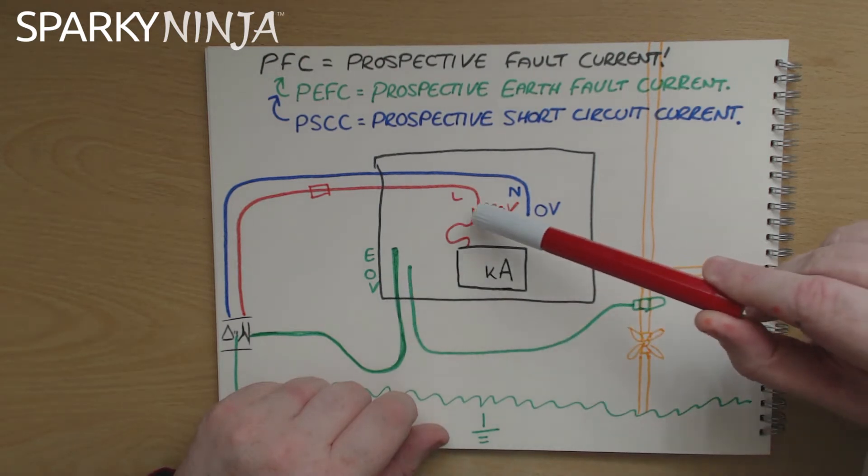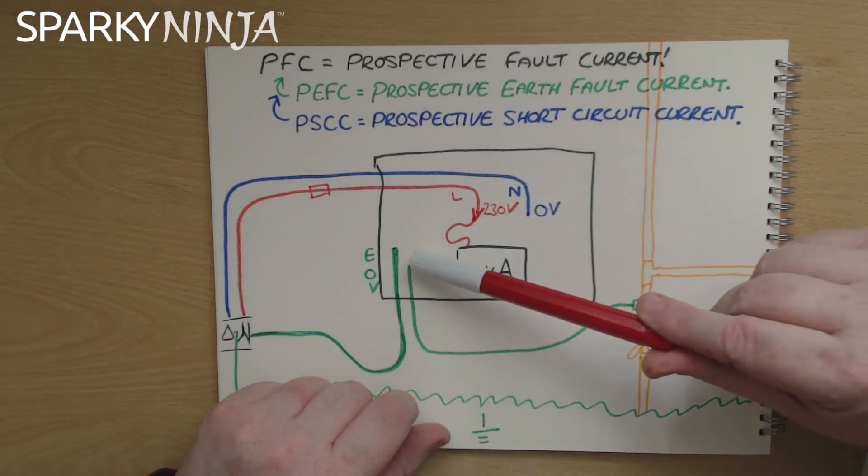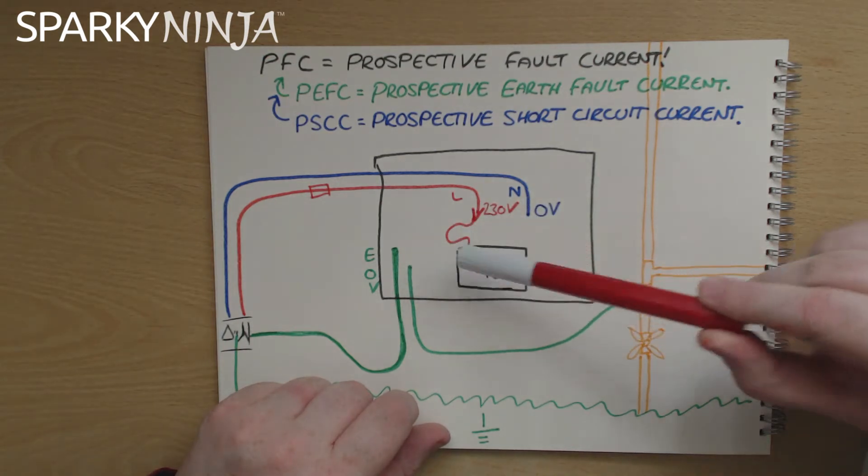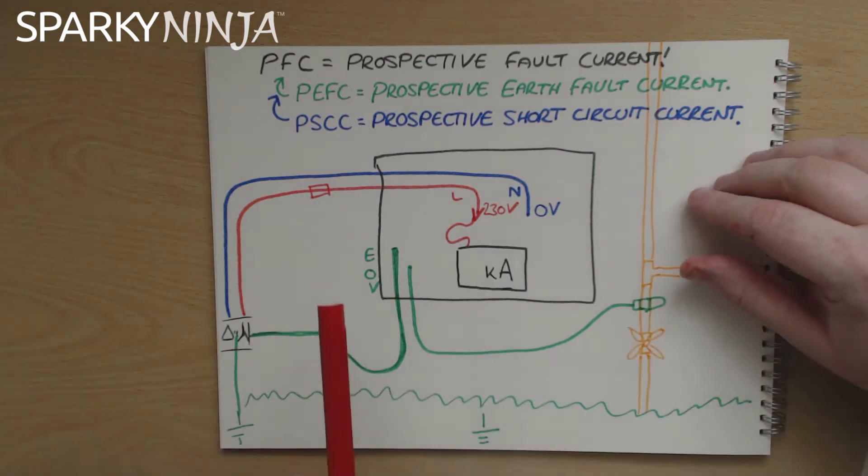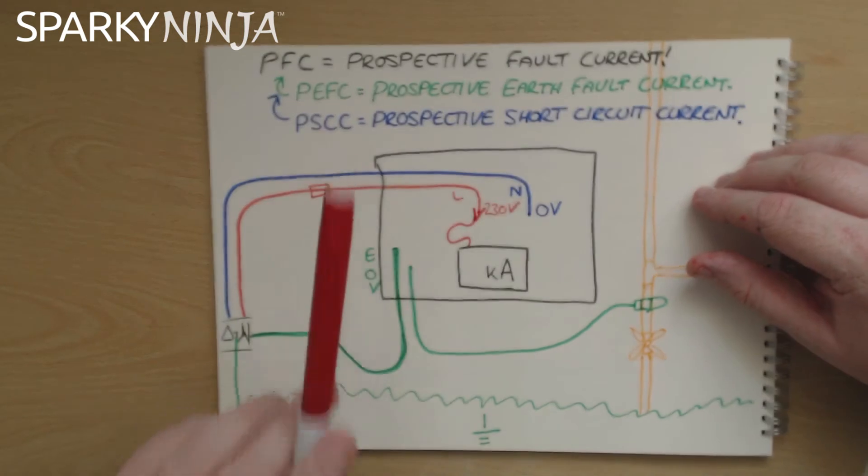So we have to consider this potential fault of line to neutral and this potential fault of line to earth. And that's why we call it the prospective earth fault current and the prospective short circuit current.